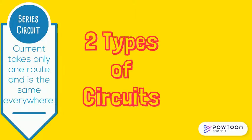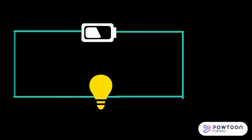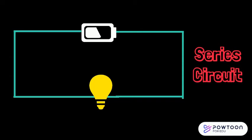Electricity is drawn as a diagram, as a circuit. The first type of circuit is a series circuit. In this, current takes only one route and it's the same everywhere. The next is a parallel circuit. In this, current splits at junctions and takes different routes. Here is a series circuit, and here is a parallel circuit.